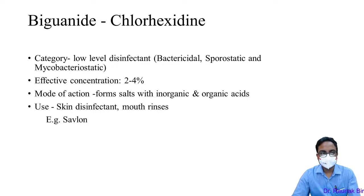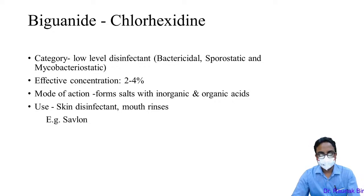Biguanides, like chlorhexidine, are low-level disinfectants used at 2–4%; 4% is used to kill C. difficile organisms. Mode of action: they form salts with inorganic and organic acids, killing the organism. They are used for skin disinfection and also as mouthwash and gargles.